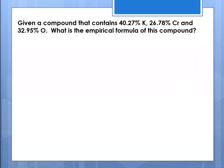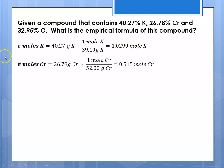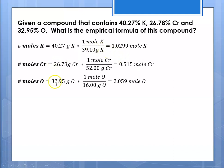Given a compound containing 40.27% potassium, 26.78% chromium, and 32.95% oxygen, what is its empirical formula? In a 100-gram sample: moles of potassium = 40.27 g ÷ molar mass = 1.0299 mol; moles of chromium = 26.78 g ÷ molar mass = 0.515 mol; moles of oxygen = 32.95 g ÷ molar mass = 2.059 mol. We don't round to sig figs at this point.